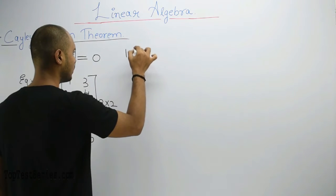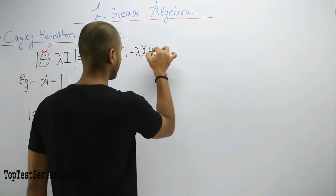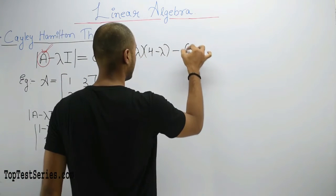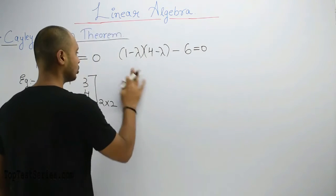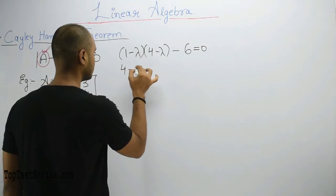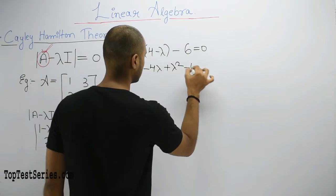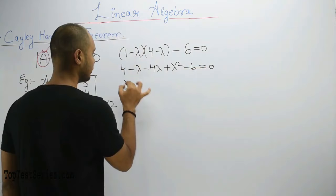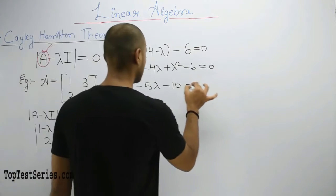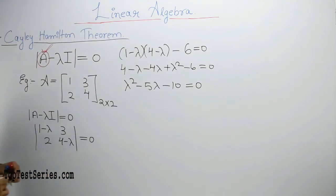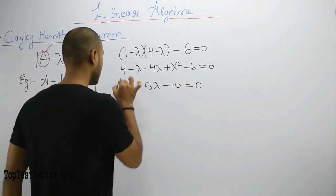Solving this: (1-λ)(4-λ) - 6 = 0, which expands to 4 - λ - 4λ + λ² - 6 = 0. Simplifying, we get λ² - 5λ - 2 = 0. So this is our characteristic equation in terms of lambda.